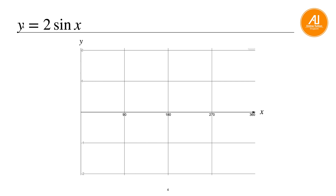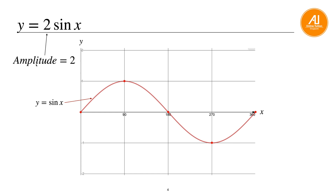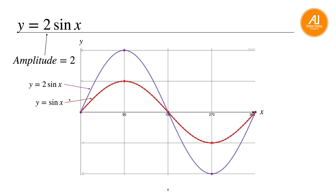For y equals to 2 sine x, draw the original sine curve first using guiding points. Since the amplitude is 2, the wave now ranges from 2 to minus 2 instead of 1 to minus 1. Multiply every y-coordinate by 2: zero stays zero, one becomes two, minus one becomes minus two.